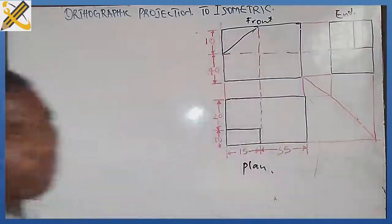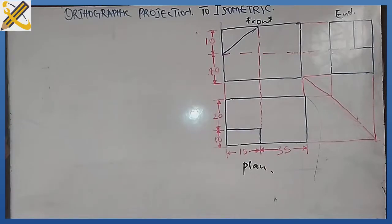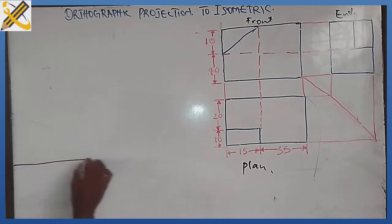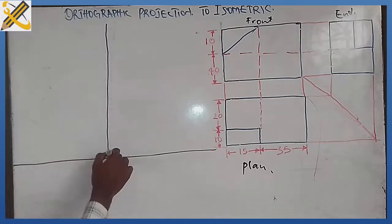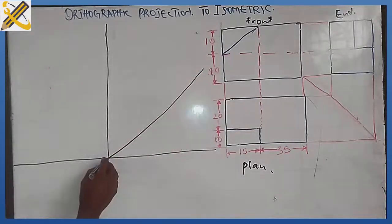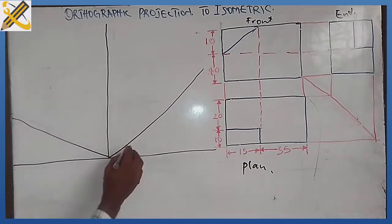To create this object in isometric form, the very first thing I like to do is to draw first of all your horizontal line. After drawing the horizontal line, you draw the vertical line. After drawing the vertical line, then you project your isometric plane at angle 30 degrees.